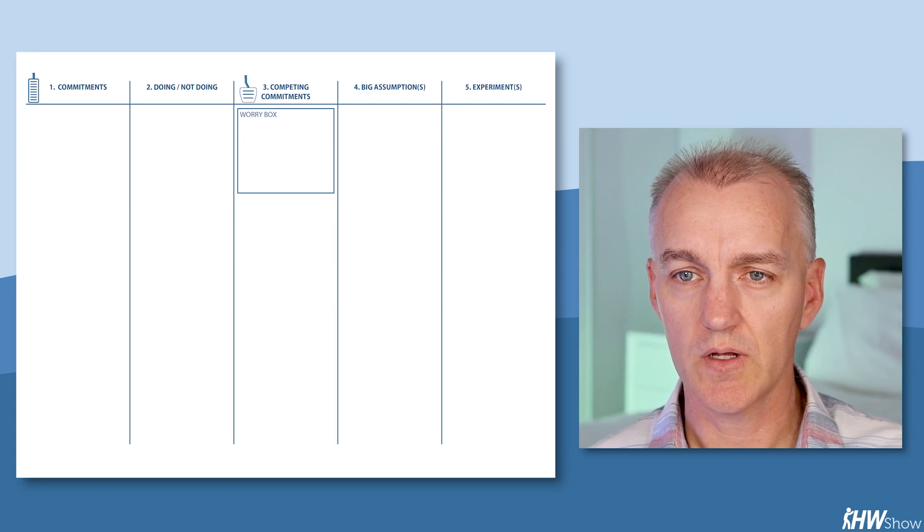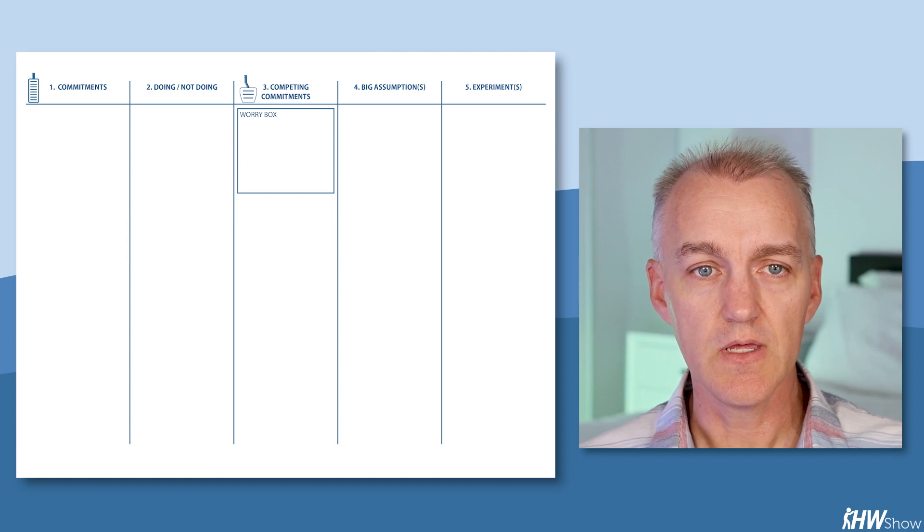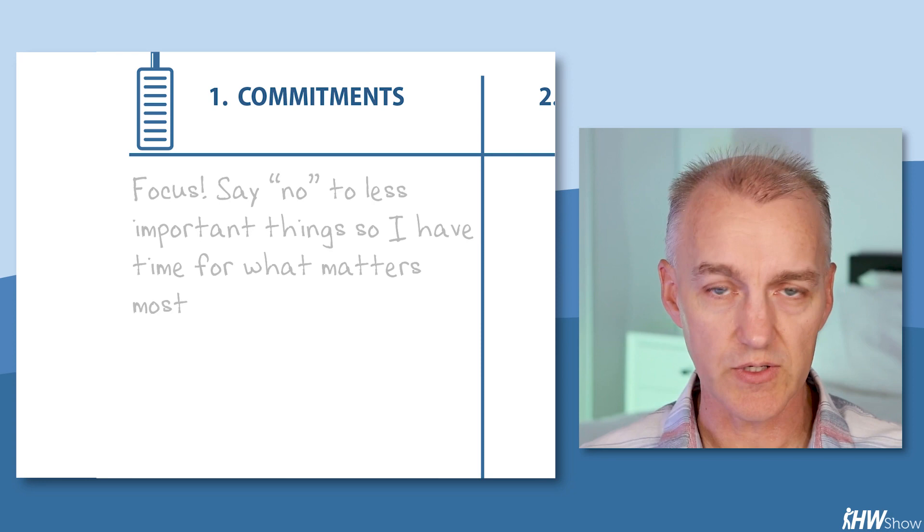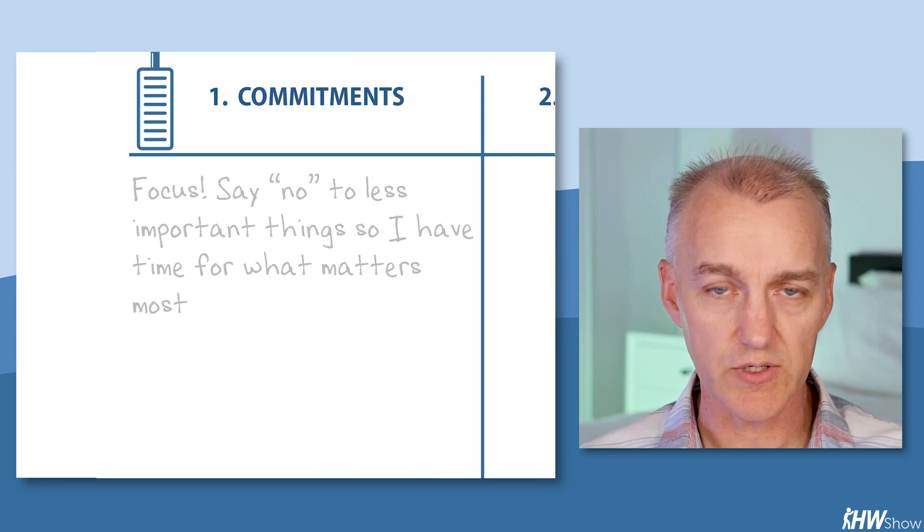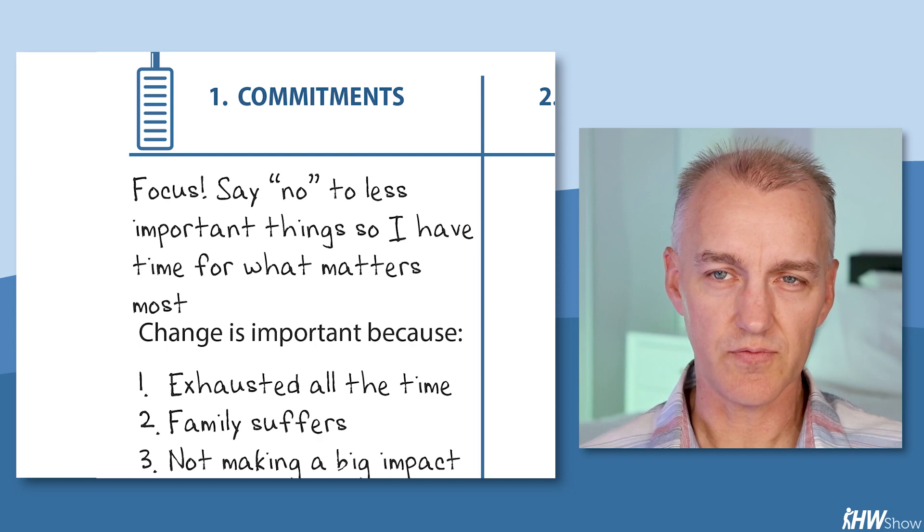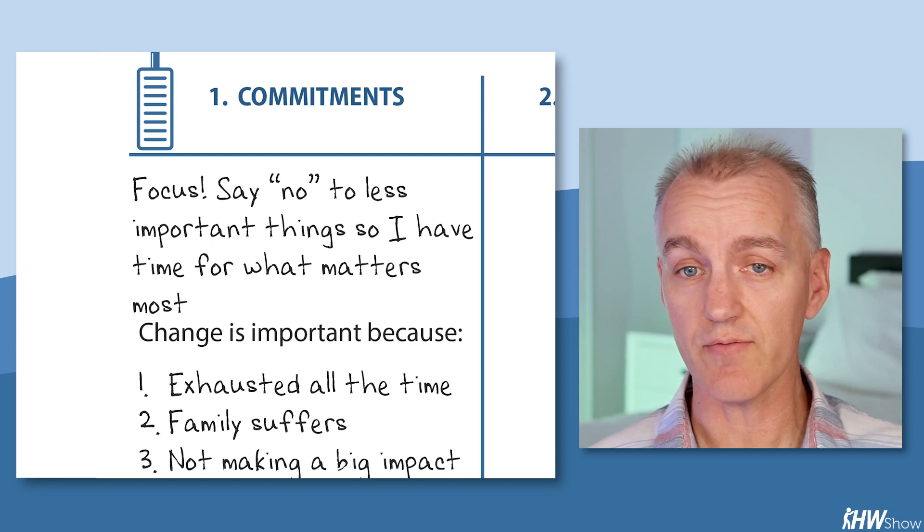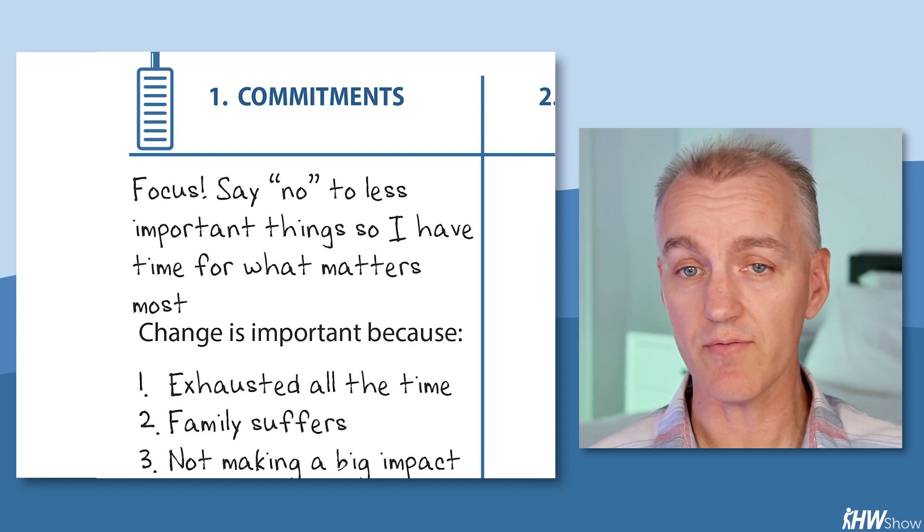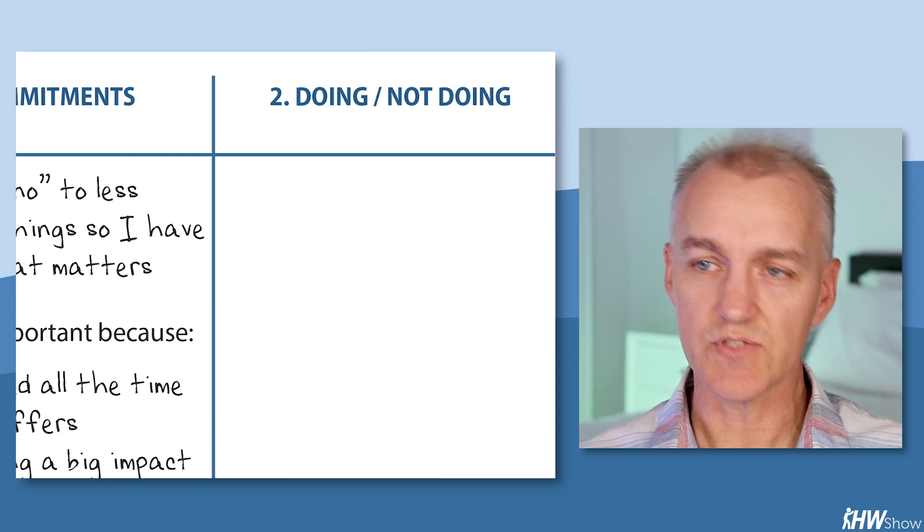Peter, tell us about your immunity to change map for addressing your overcommitment situation. Okay, I'll sort of walk us through the columns here and give you a little bit of play by play. When I was reading the book, I started thinking about this problem of lack of focus and just saying yes to everything. And so in column one, the thing I wanted to do, the change goal was to focus, to say no to less important things so that I have more time for what matters the most. And this was important to me because I wanted to not be exhausted all the time. I didn't want my family to suffer from this tendency that I had. And I also felt like spreading myself a little thin was causing me to not have as big an impact as I could have in any of those potential areas. So I really wanted to make sure I was making a big difference without burning out and being more connected to my family.